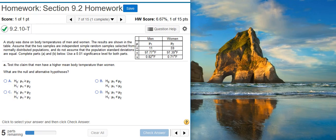I'm Professor Curtis of Aspire Mountain Academy here with more Statistics Homework Help. Today we're going to learn how to use StatCrunch to perform hypothesis testing on two independent sample means of body temperatures. Here's our problem statement. A study was done on body temperatures of men and women. The results are shown in the table. Assume that the two samples are independent simple random samples selected from normally distributed populations, and do not assume that the population standard deviations are equal. Complete parts A and B below. Use a 1% significance level for both problems.